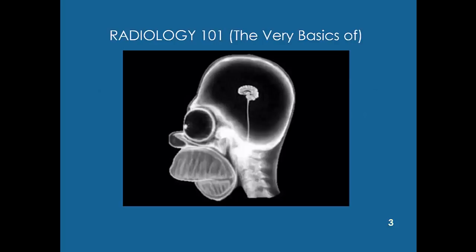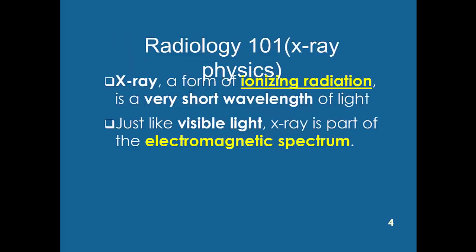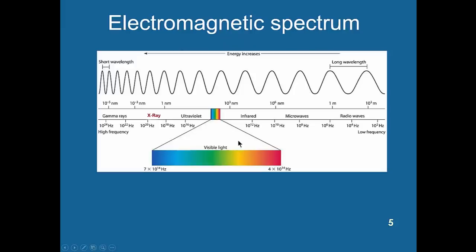X-ray is a form of ionizing radiation — a very short wavelength of light, just like visible light, only shorter, and it is part of the electromagnetic spectrum. Radio waves are very long; x-ray is much shorter, not as short as gamma ray, but it's dangerous. It penetrates body tissue — it can go right through your body, through wood, and things like that, but it cannot go through metals like lead.